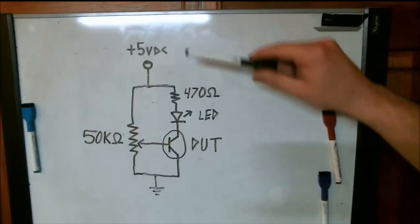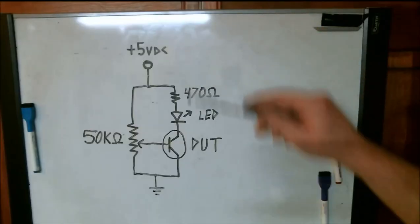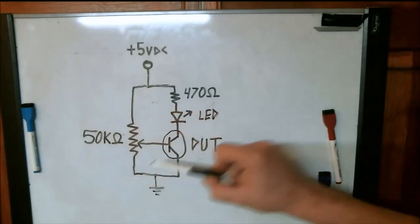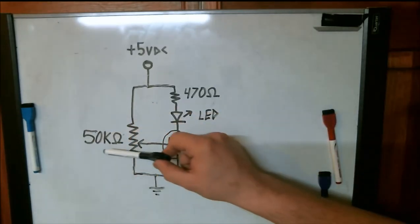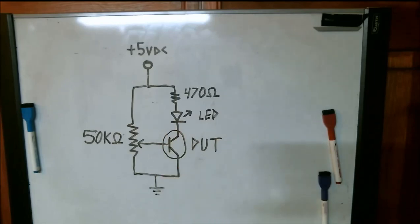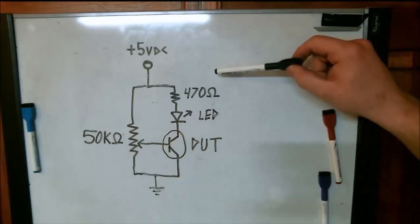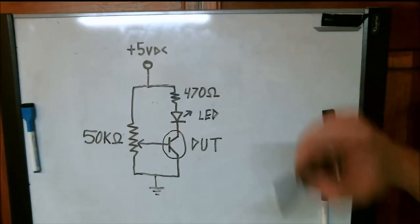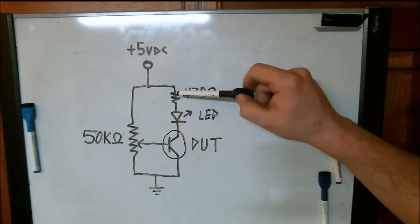Here's the schematic. I'm using a 5 volt DC power supply, and I'm also using a 50k ohm resistor. You may be better off using something closer to a 1k ohm resistor, but that's just what I had on hand. And then I have an LED, a 470 ohm resistor in series with that LED.